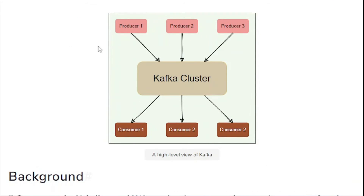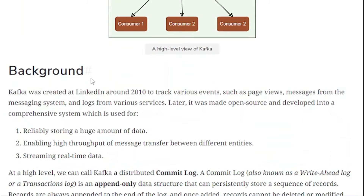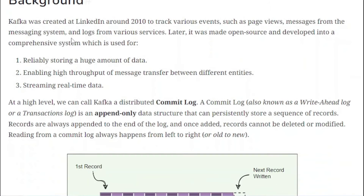Here is a high-level overview diagram of Kafka. Producers 1, 2, and 3 are publishing messages to the Kafka cluster. The Kafka cluster is a group of servers where Kafka is hosted or deployed. There are three consumers — consumer 1, 2, and 3 — and they are consuming all the messages.